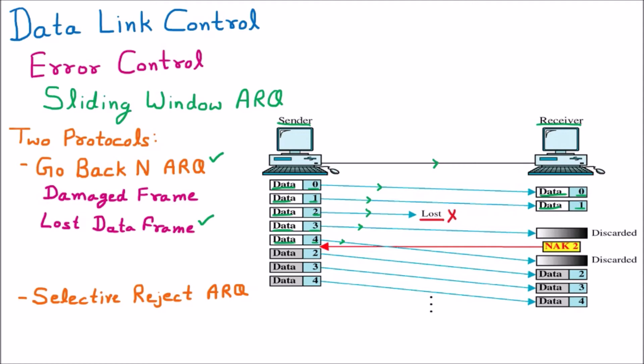When the receiver receives packet number 3, it sees it is packet 3 and discards it, because it was waiting for packet 2. The receiver discards packet 3 and immediately sends a negative acknowledgement — NAK for packet 2 — because packet 2 was supposed to arrive but did not. Until that NAK reaches the sender, the sender has already sent a few more packets. The problem was with data packet 2, lost in communication, and the sender becomes aware only after already sending packets 3 and 4.